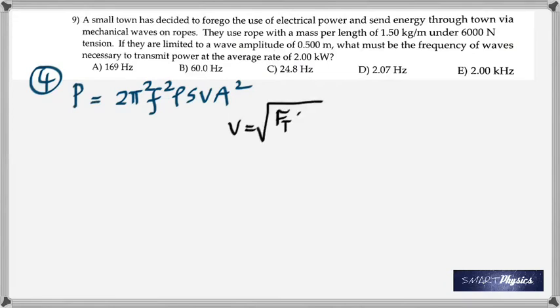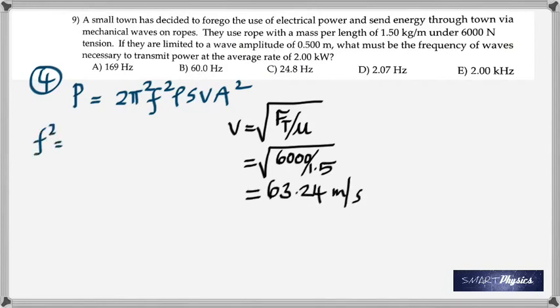And we have this ready-made formula for power transmitted. That is 2 pi squared F squared rho S velocity A squared. And remember that the terms are frequency, density, surface area, velocity, and amplitude. But velocity is square root Ft by mu. So first calculate that: 63.24 meters per second. And once you get there, rearrange this equation to make frequency the subject.